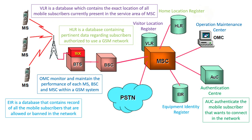Next is the EIR — Equipment Identity Register. EIR is a database that contains records of all mobile subscribers that are allowed or banned in the network. If you are banned in the network, you cannot enter the network and cannot make a call.